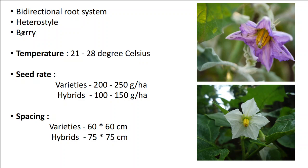The fruit type of Brinjol is a fleshy berry. A temperature of nearly 21 to 28 degrees Celsius is required for growing Brinjol. The seed rate required is 200 to 250 grams per hectare, and for hybrids it is 100 to 150 grams per hectare. For spacing, varieties need 60 x 60 centimeters and hybrids need 75 x 75 centimeters.